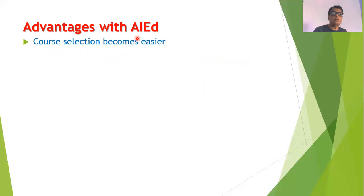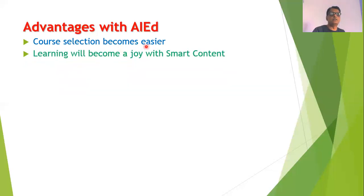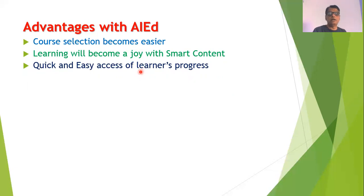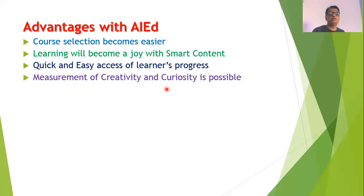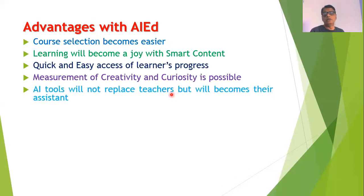We definitely have advantages when we use artificial intelligence in education. Course selection will be much easier with AI technology. Learning will become a joy because the content will be smart and dynamic, changing as per the student. Data related to learning progress will be easily and quickly accessible to parents, teachers, and the student. Practically, creativity and curiosity are not possible to measure, but with AI it may be possible to measure these, and in future the student's prospects will mostly depend upon these two parameters.